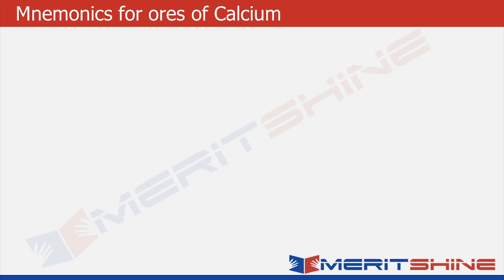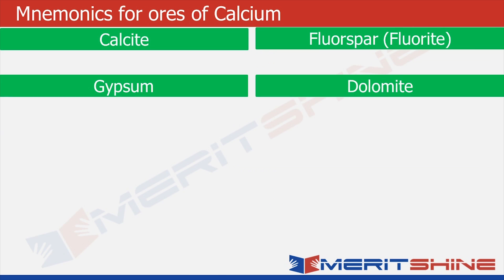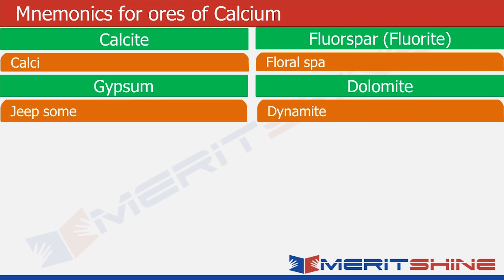Now it's time to fill our green boxes and then our orange boxes. For calcite what comes to mind is 'calci,' a common term used for calculator. For fluorspar what comes to mind is floral spa — a spa with flowers. Gypsum reminds me of jeep and some. And dolomite will again remind me of dynamite.